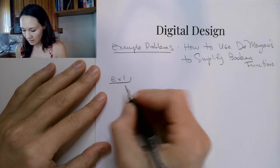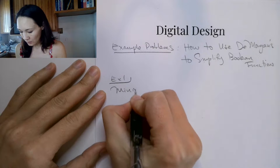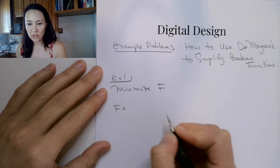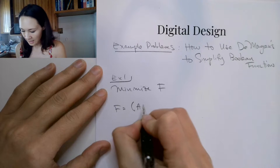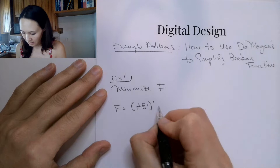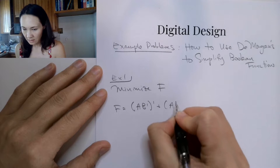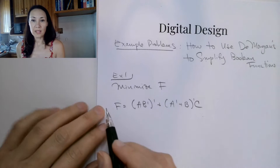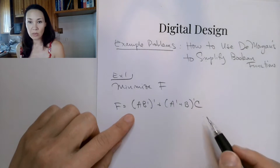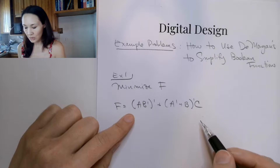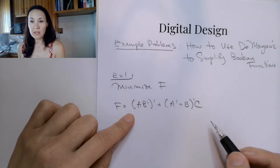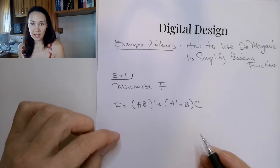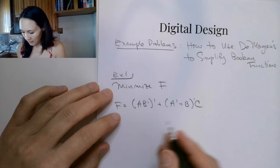For example one, suppose we were asked to minimize f, where f is (a·b')' OR (a' OR b')·c. This algebraic function corresponds to a logical gate array. We want to minimize this, meaning we want to express this same logic but with fewer gates. So we're going to use De Morgan's.